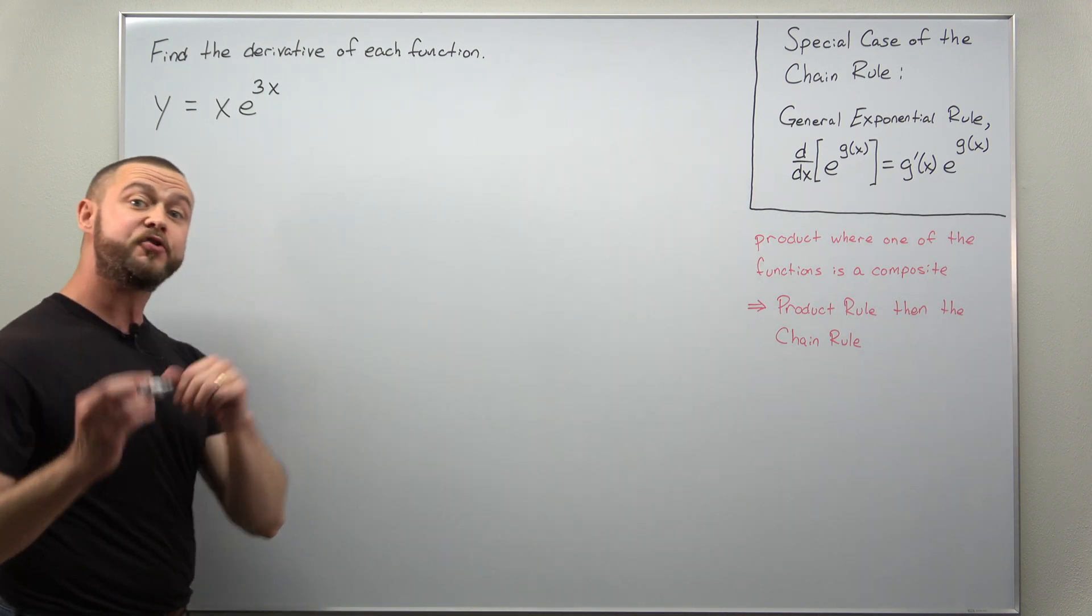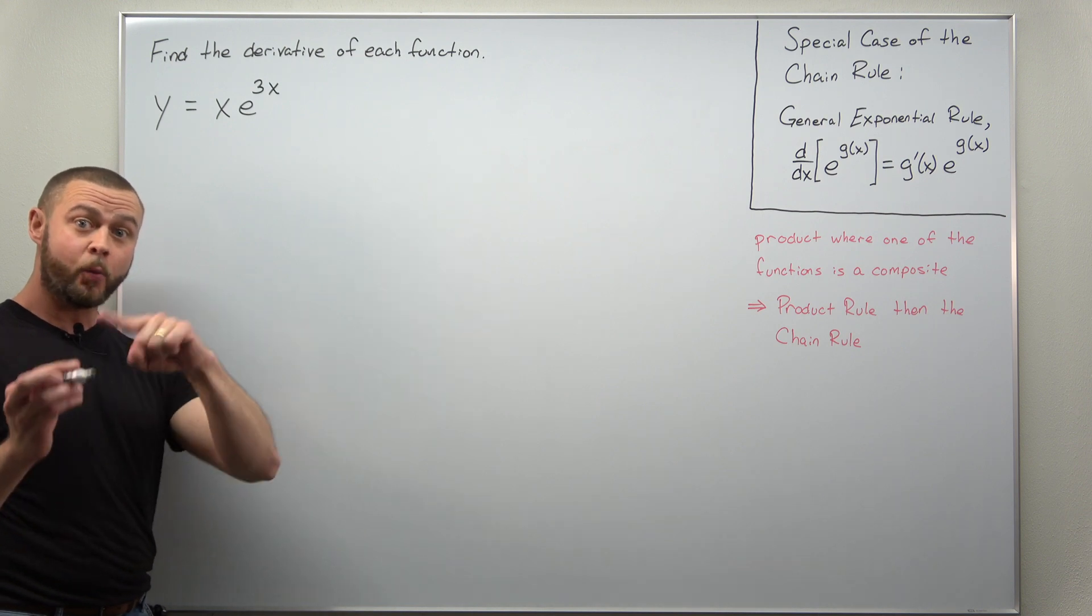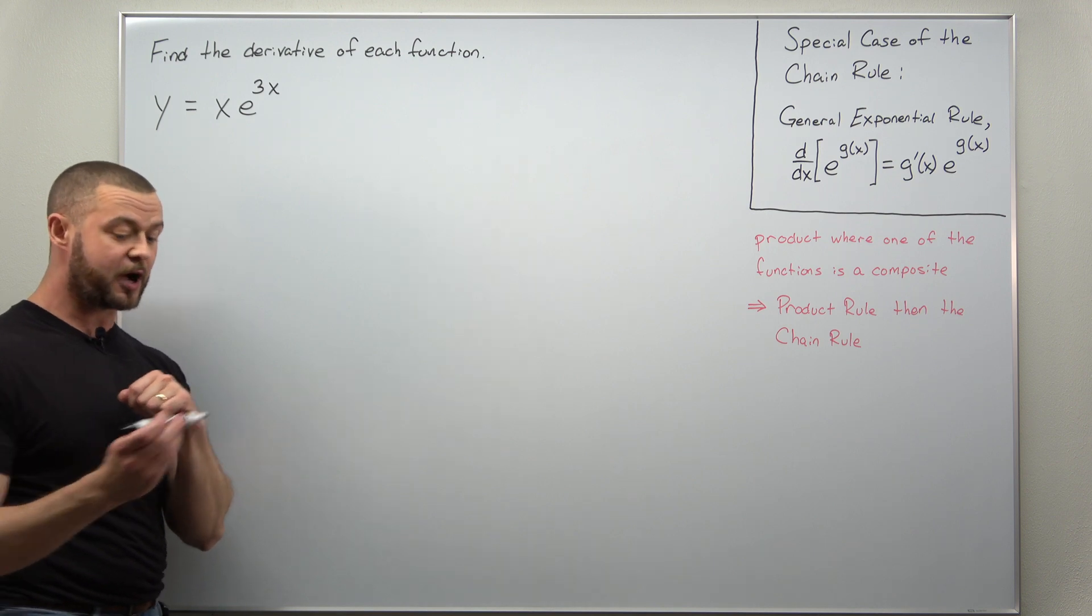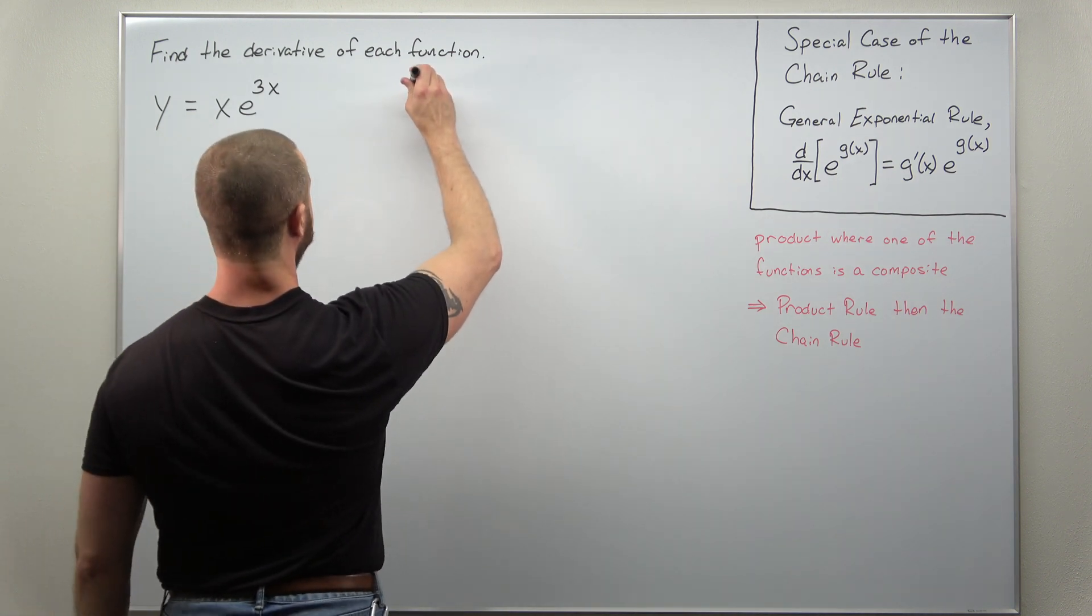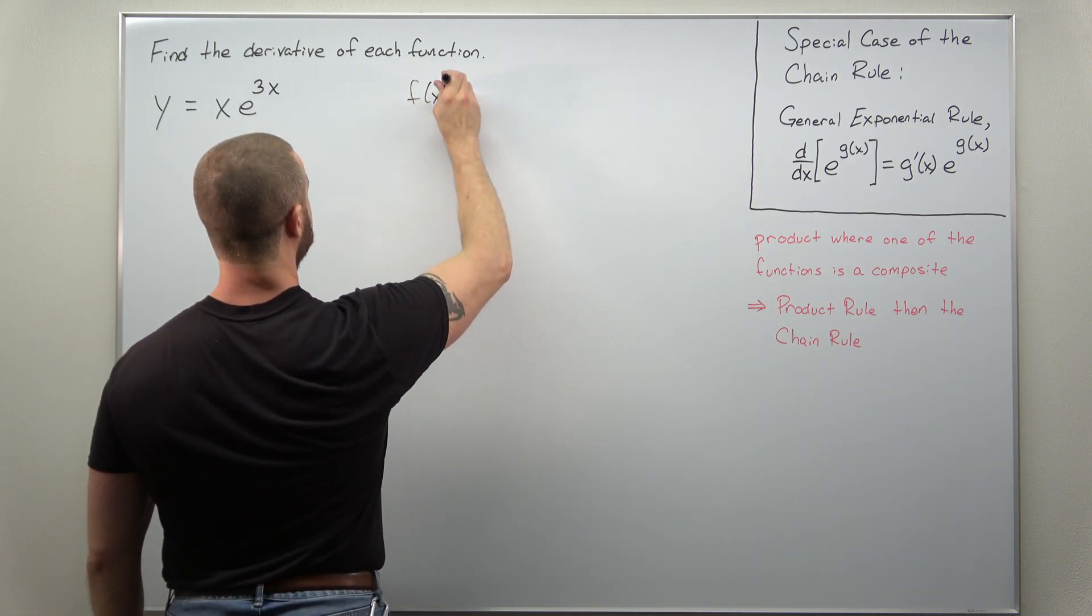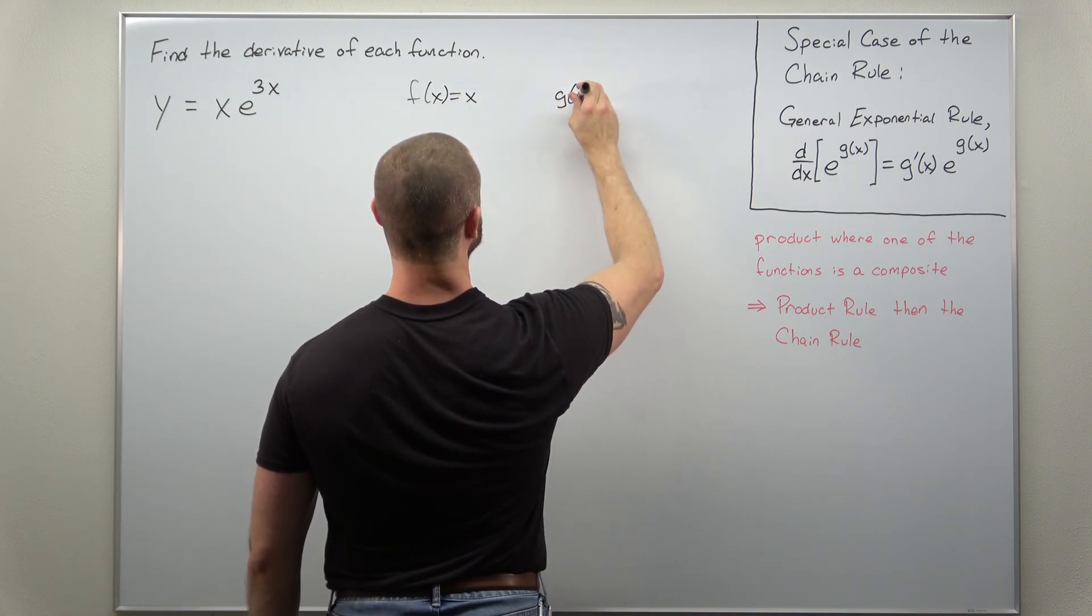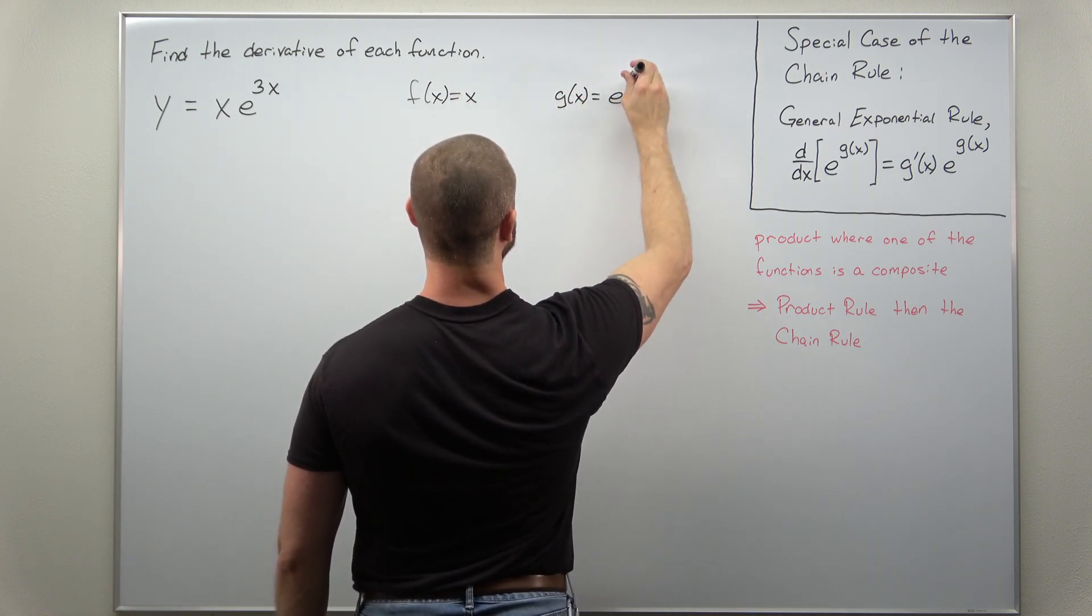Now let's start by trying divide and conquer. We'll identify f and g of x here for our function identified as a product. So our first function f, you might write that as x, and then our second function g(x) = e^(3x).